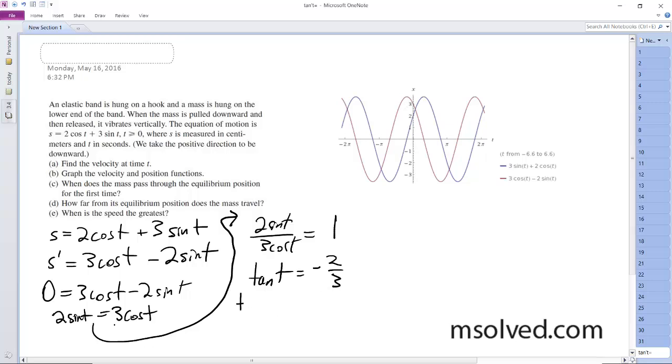All right, so t is going to be equal to n pi plus tangent negative 1, because I had to take the arctangent negative 2 thirds. And this is right. So t is ultimately equal to pi minus the arctangent of 2 thirds, which is approximately 2.55 seconds.